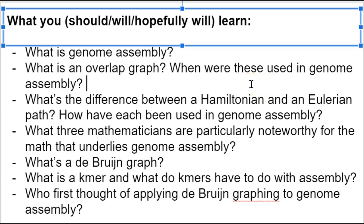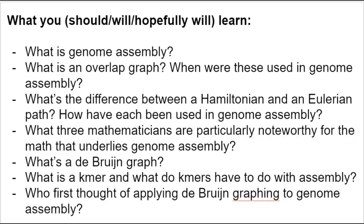We're going to talk about three famous mathematicians from long ago — some long ago, some more recently — and what they did that was really important for genome assembly, even though they didn't know that's what they were doing it for. We're going to talk about what are called De Bruijn graphs, talk about K-mers and what they have to do with assembly, and then who first thought of applying De Bruijn graphs to genome assembly.